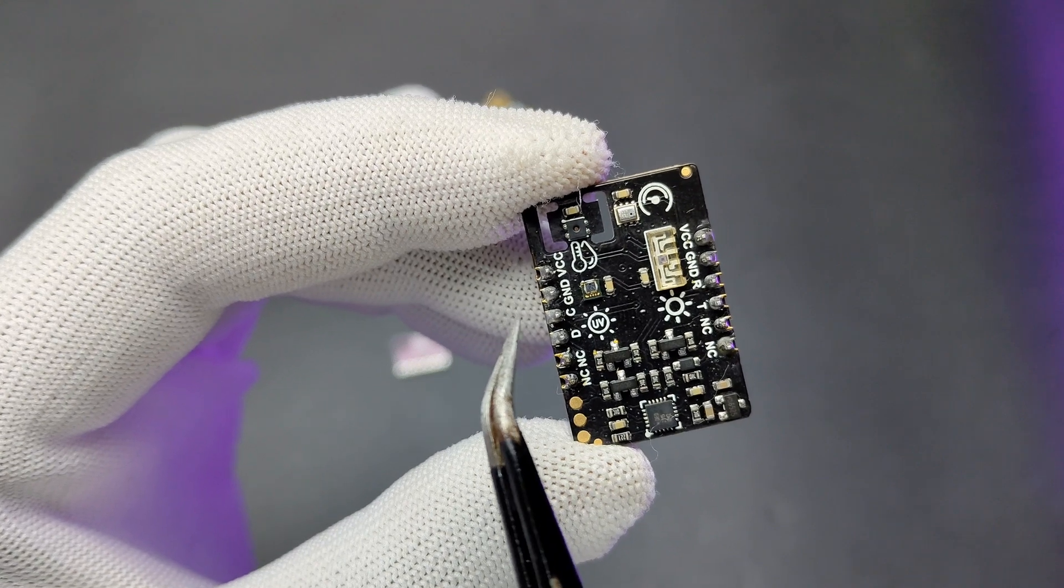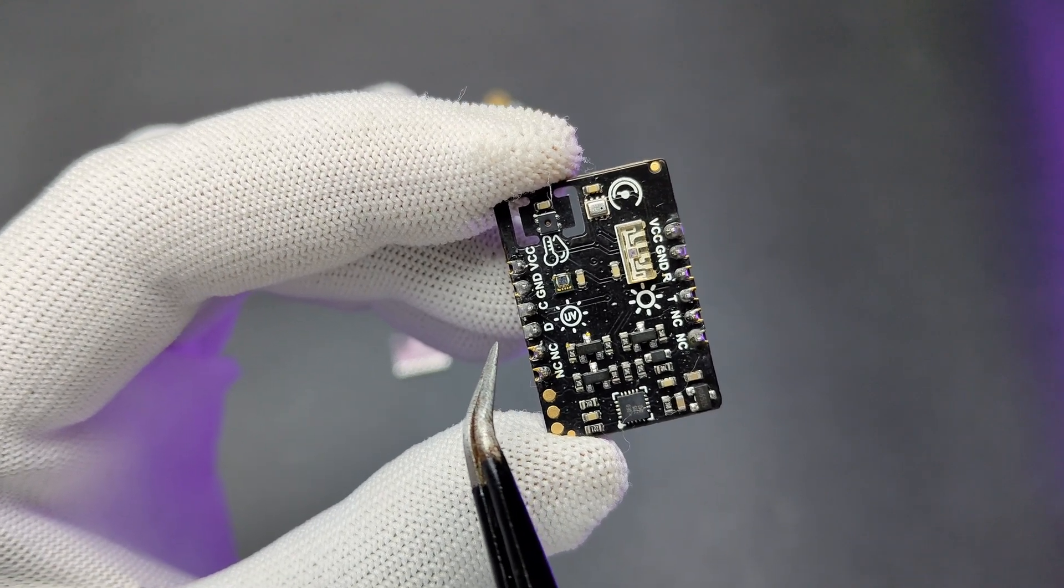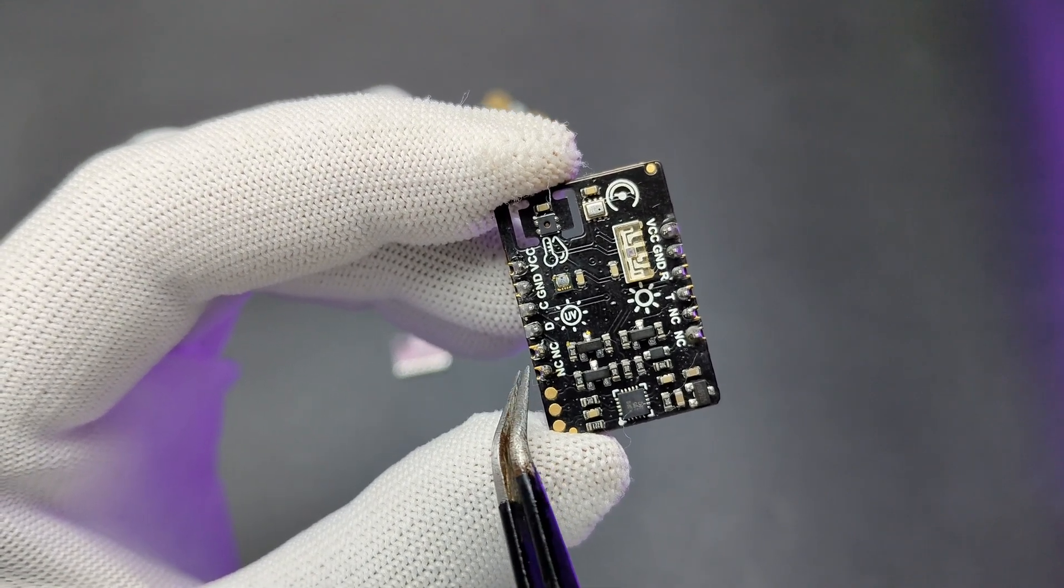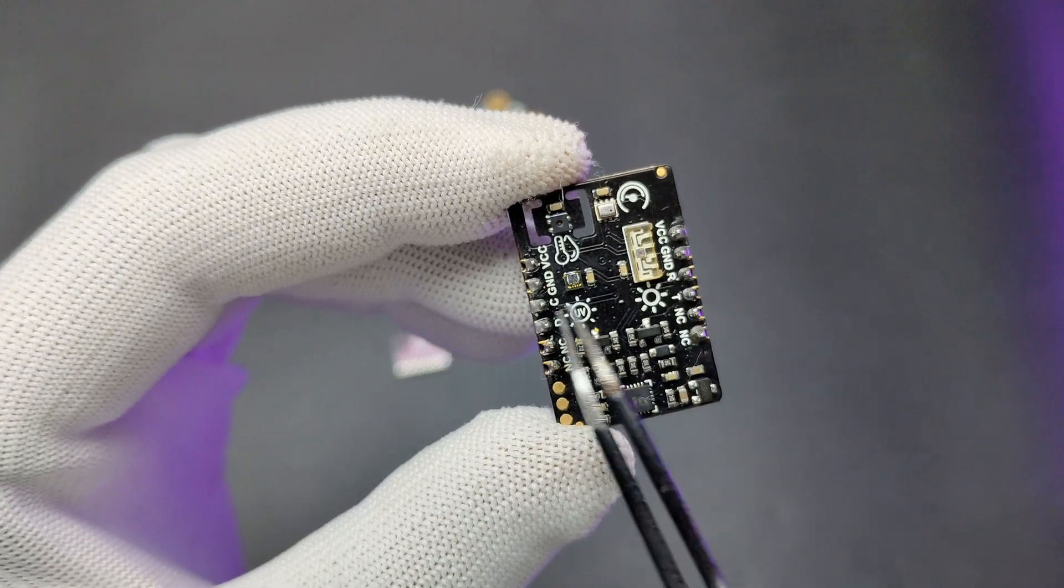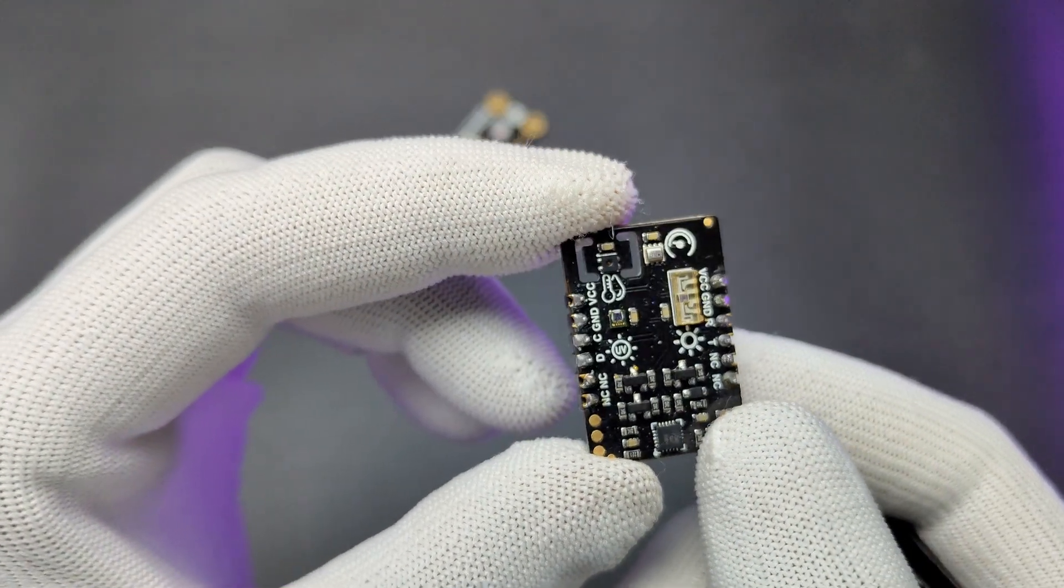On the opposite side, we have the pins for I2C communication: 3.3V, GROUND, SCL and SDA, then two NC pins. That's all about the hardware specs of this module.